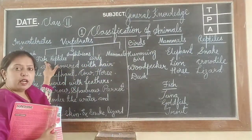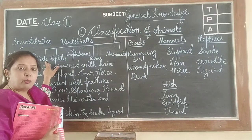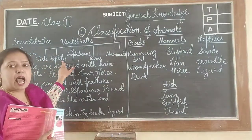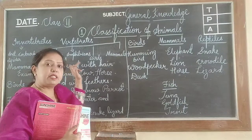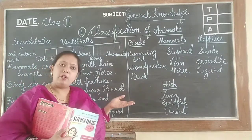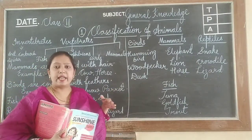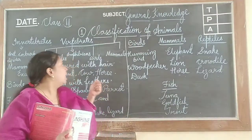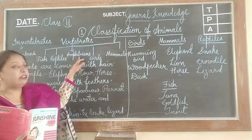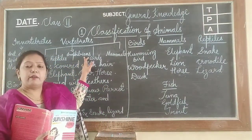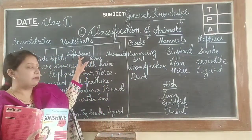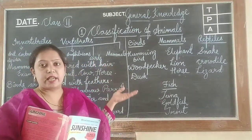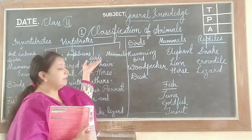Fish are animals which live under water. Reptiles are animals who live on land and also in water. Examples: crocodile, snake, lizard. Amphibians — for example, frog is an example of amphibians.